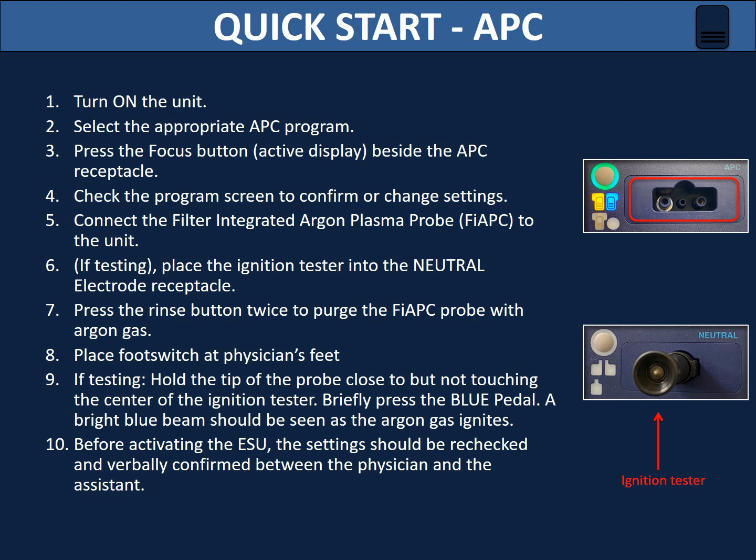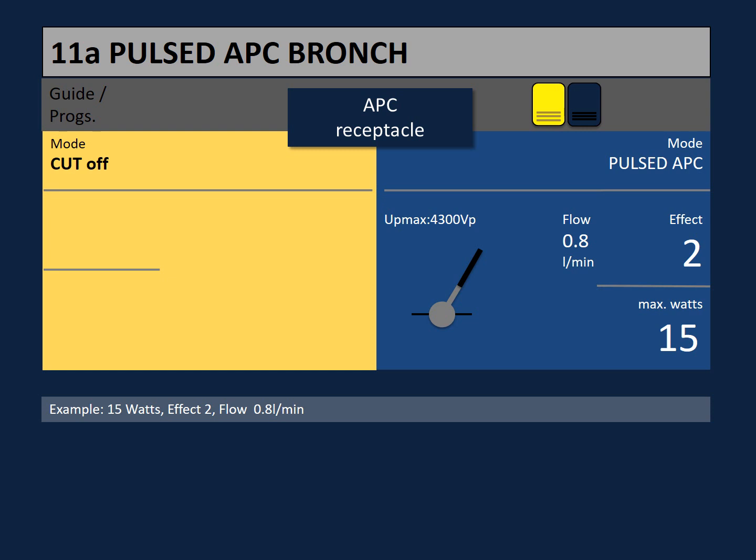In APC, the distal tip design of the probe determines the direction of argon gas flow, which can be axial, side fire, or circumferential. Place the pad on the patient and plug the return electrode into the neutral electrode receptacle. Before activating the ESU, the settings should be rechecked and verbally confirmed between the physician and the assistant. There is no ideal setting to be used during pulsed APC; it is always recommended to start by using the lowest possible setting that will achieve the desired surgical effect. It is worth mentioning that settings are usually higher when used for ablation. The APC probe must always remain in the clinician's field of vision and activated only when the tissue being treated is within the field of view.